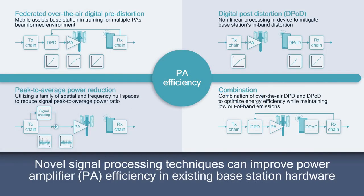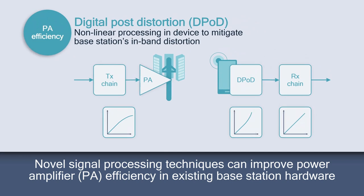We therefore offer a combination of signal processing-based techniques, including peak-to-average reduction methods, digital pre-distortion assisted by the mobile phone, and digital post-distortion methods in order to suppress the non-linearities induced by the power amplifiers and enable them to operate in the more power-efficient operating point. In our demo, we will be using digital post-distortion, which does not require any change in the base station hardware.